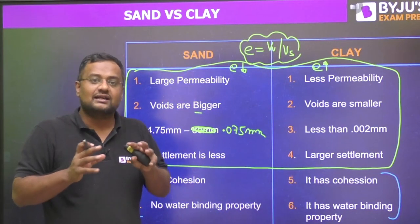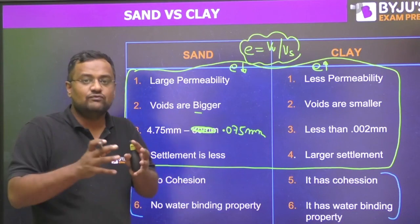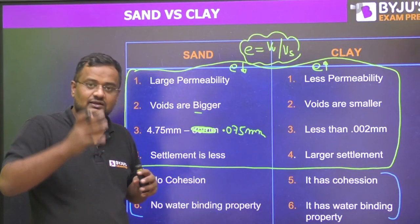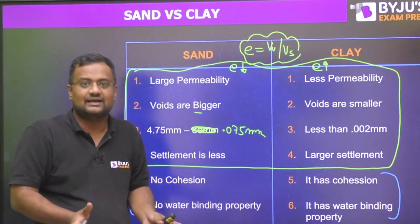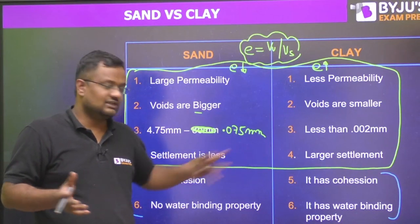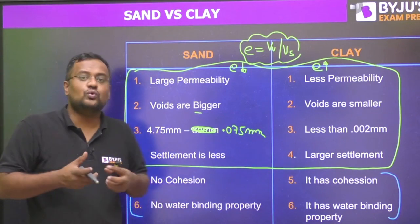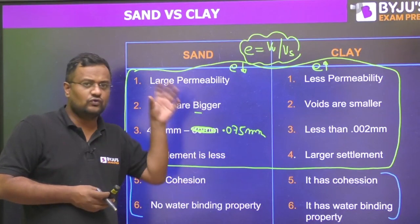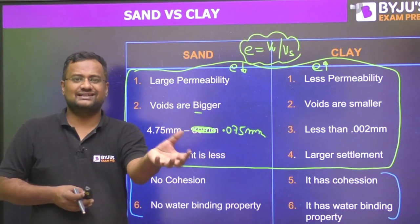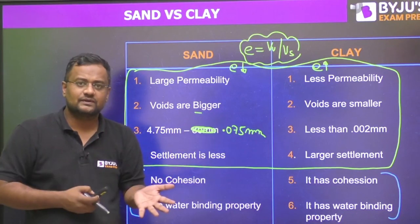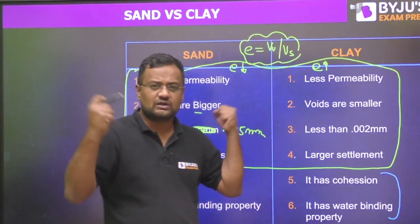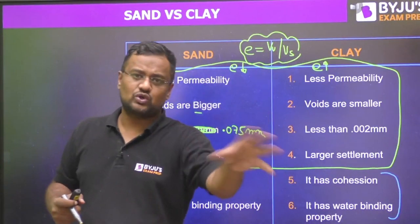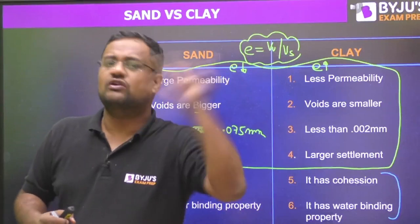The two field tests can give you results directly: if you throw the soil and the particles are loose, not binding with each other — no cohesion — and they separate on the floor, that will be sand; otherwise it is clay. Also, if you add water to the soil held in your fist, in sand the water will seep out very quickly, but in clay the water-binding property means the water will not come out easily.